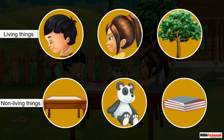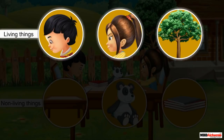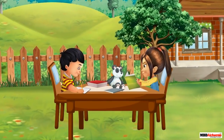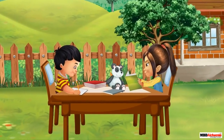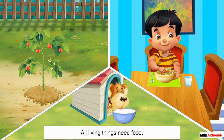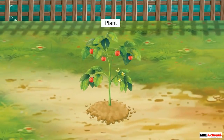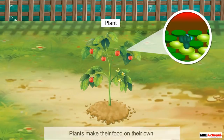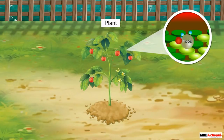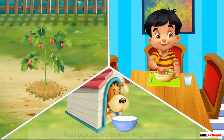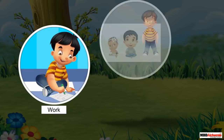Do you know how a living thing is different from a non-living thing? There are certain characteristics that a living thing has but a non-living thing doesn't. All living things need food. Since plants are living things, they also need food. They make their own food instead of depending on outside sources. Food provides energy to all living things, which allows them to work and grow.